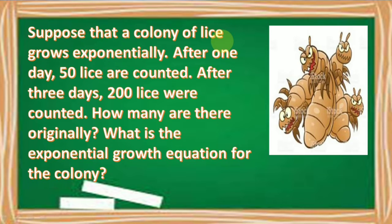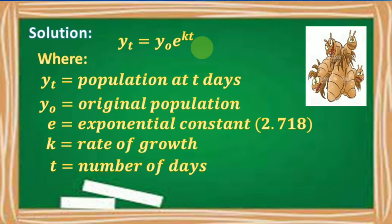Let us now solve problems involving exponential growth. Suppose that a colony of flies grows exponentially. After one day, 50 flies are counted; after three days, 200 flies were counted. How many are there originally? What is the exponential growth equation for the colony? We are going to use the equation y_t = y₀ · e^(kt).